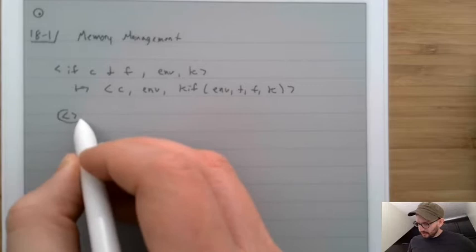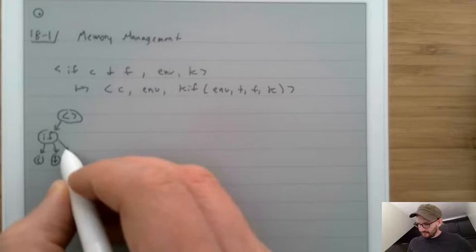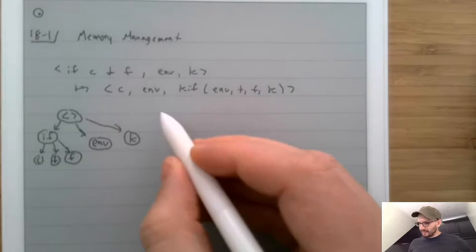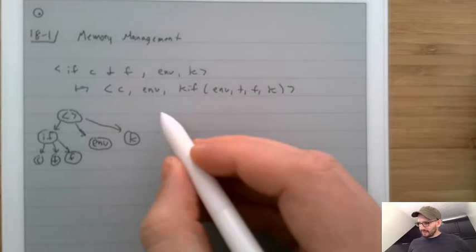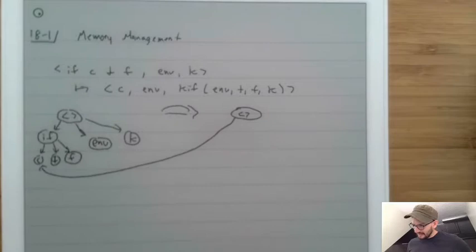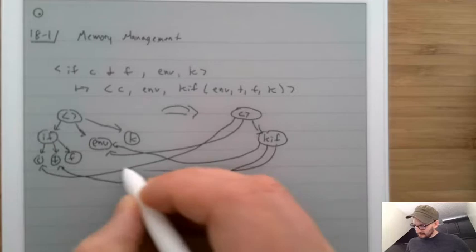We start off with a tuple pointing to an if, pointing to c, t, and f, also pointing to an environment and a k. Then we make a new tuple pointing to c, pointing to that environment, and pointing to a new structure — the kif — which itself points to that environment, t, f, and k.